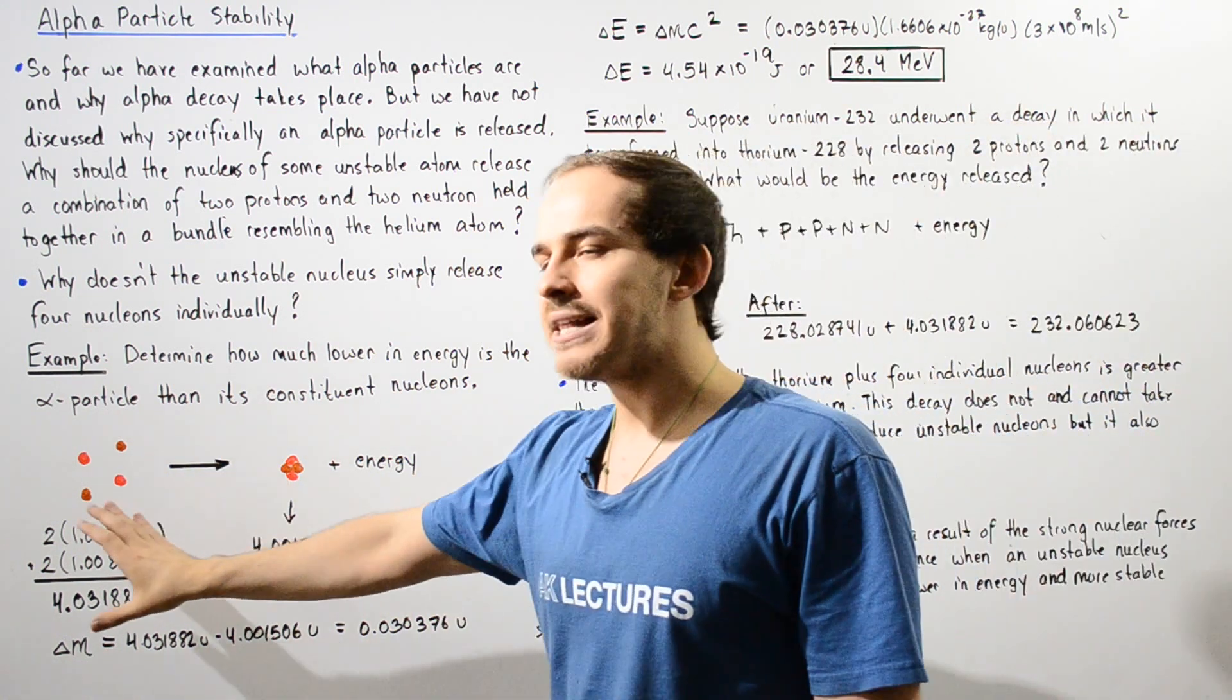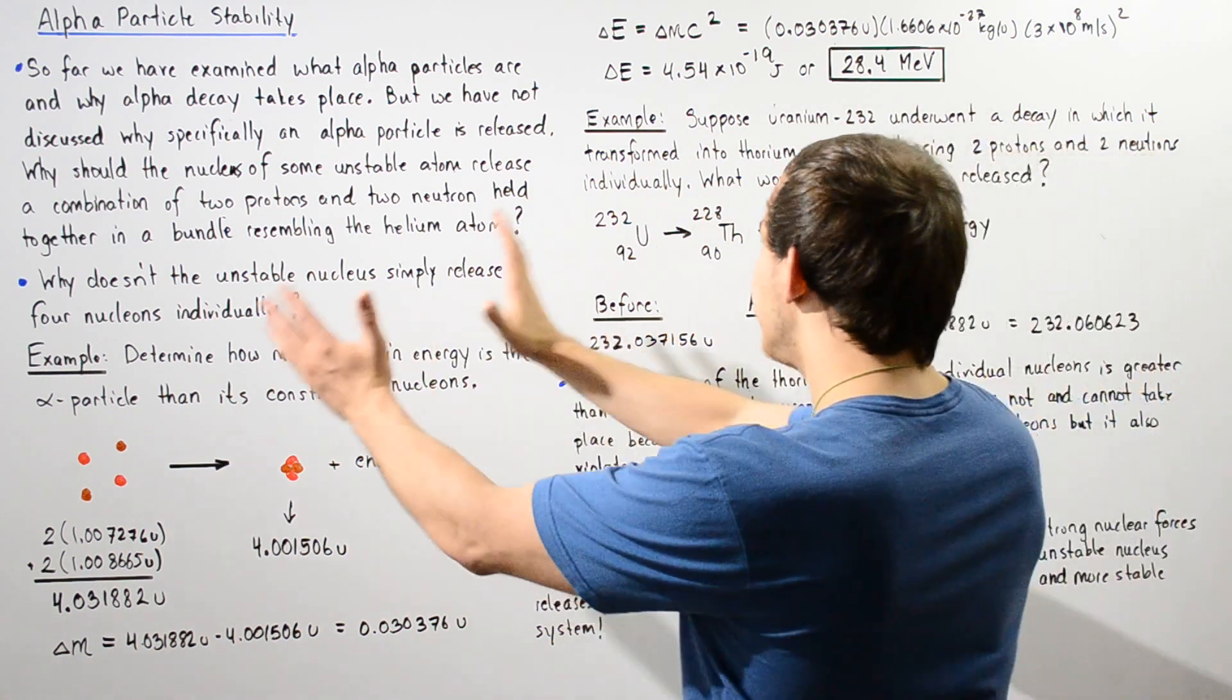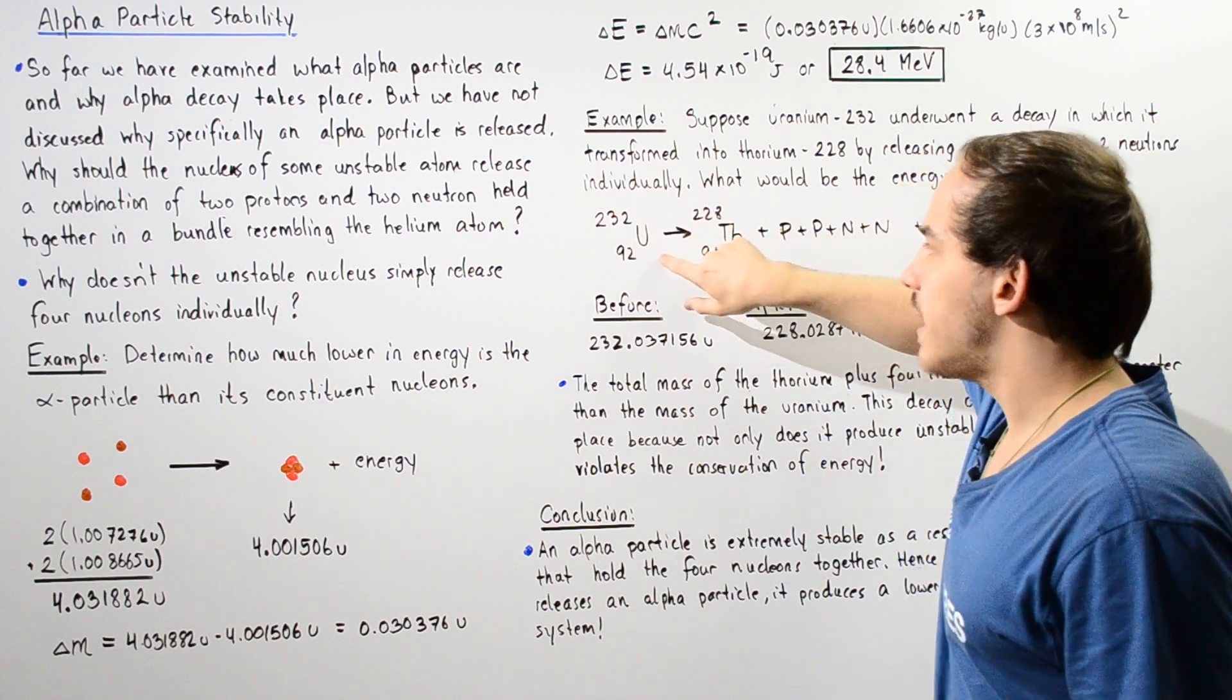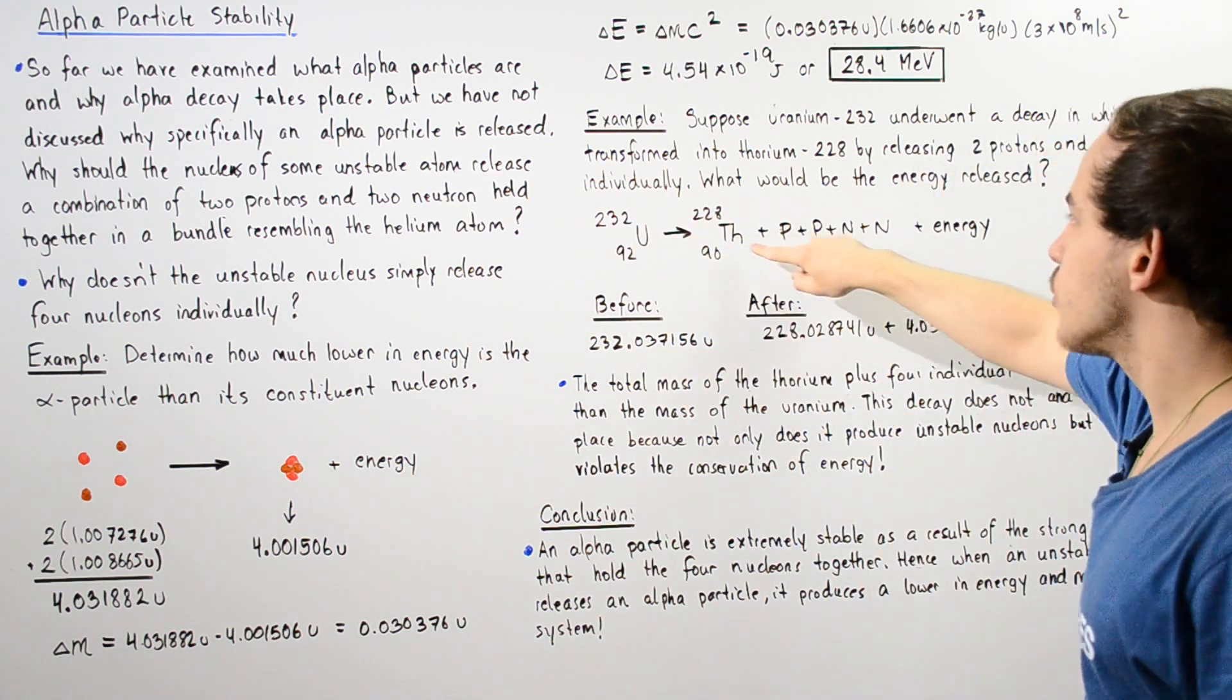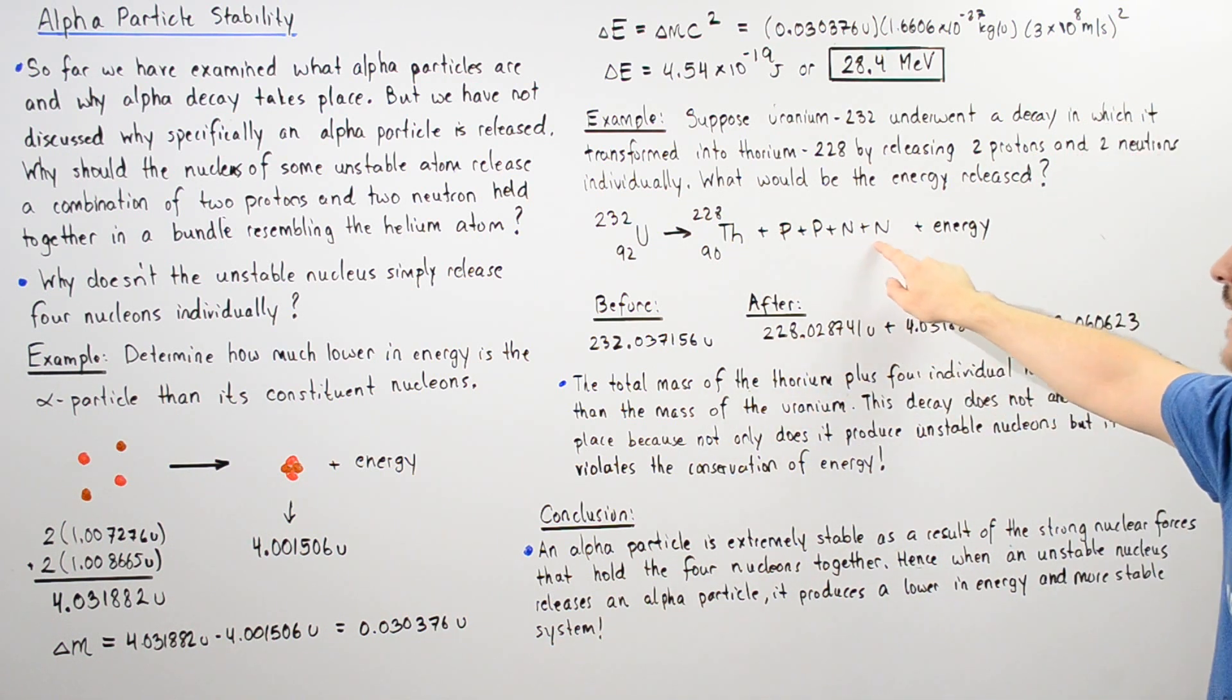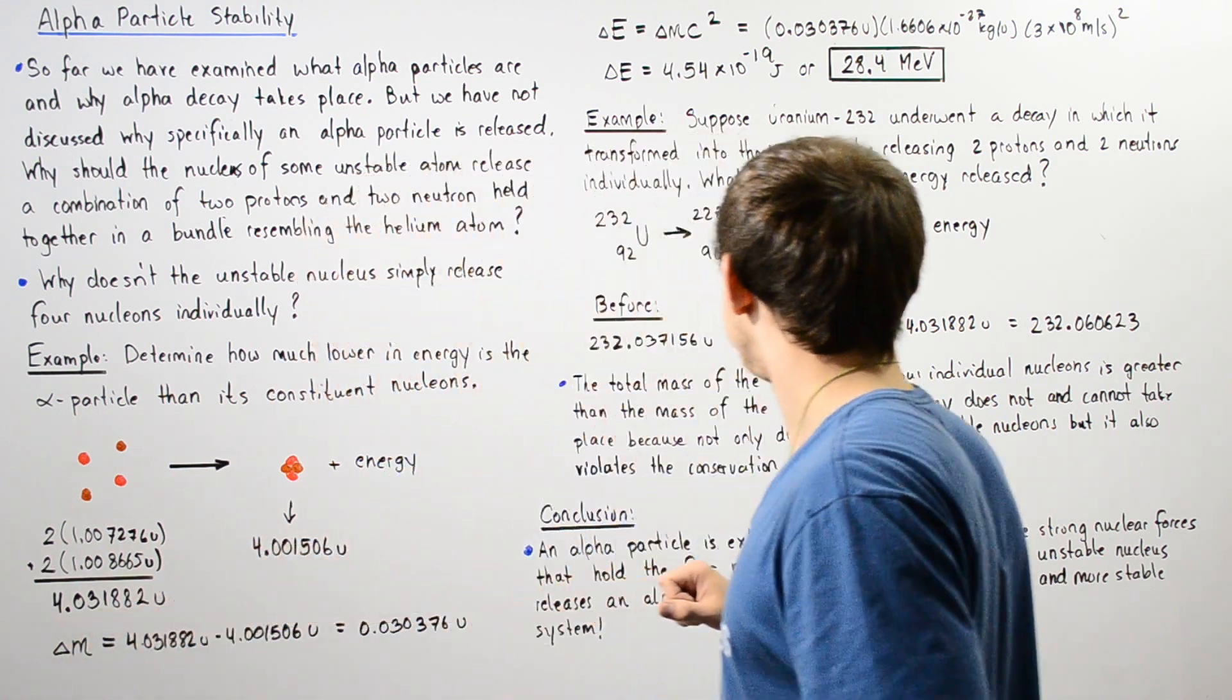So once again, we're going to take the same exact approach. Let's calculate the mass of the reactants and the mass of the products. Now, the mass of our Uranium is given by this quantity. The mass of the Thorium is given by this. And the mass of these individual four nucleons is given by this quantity.